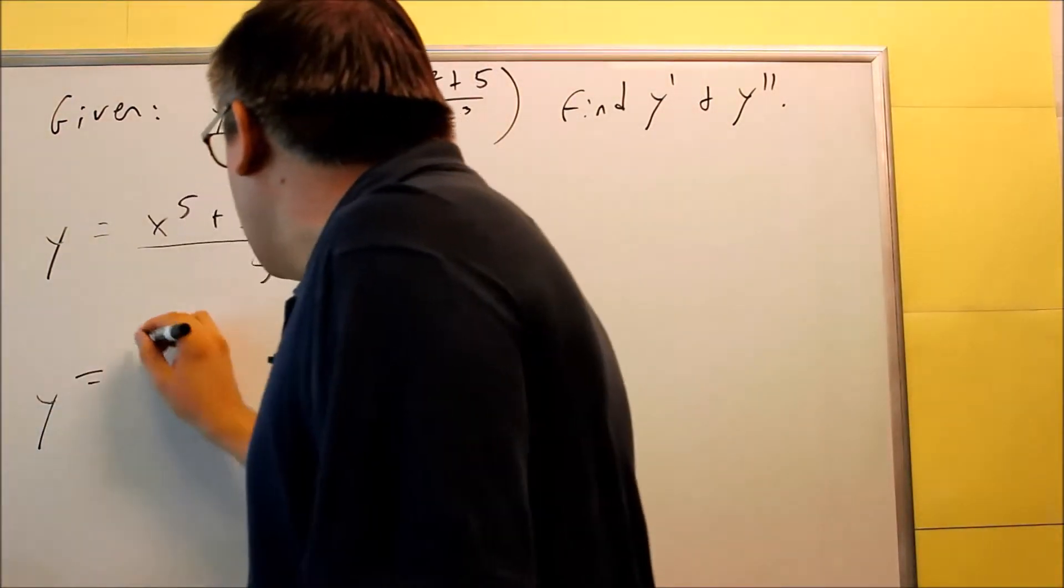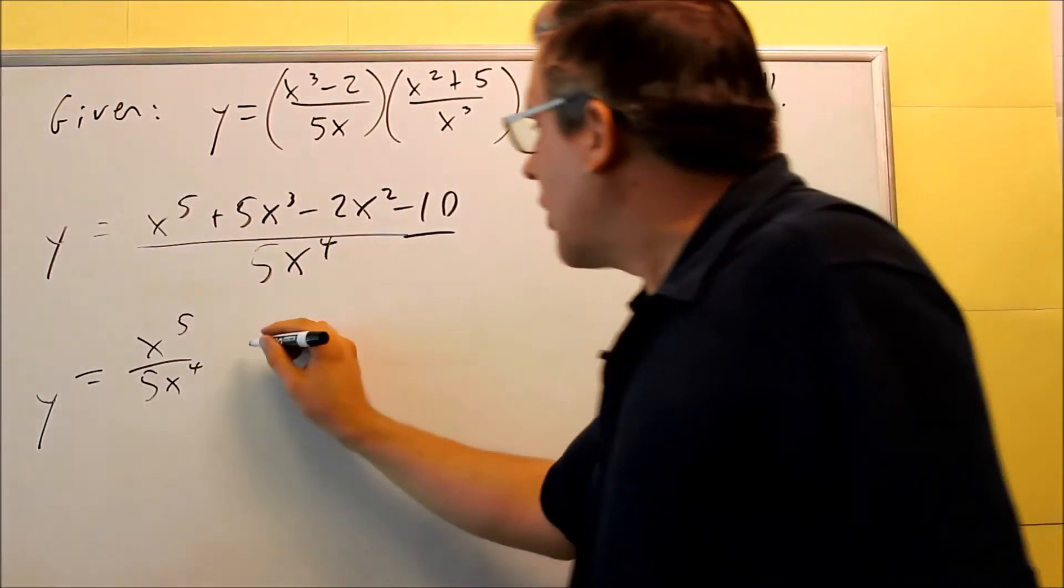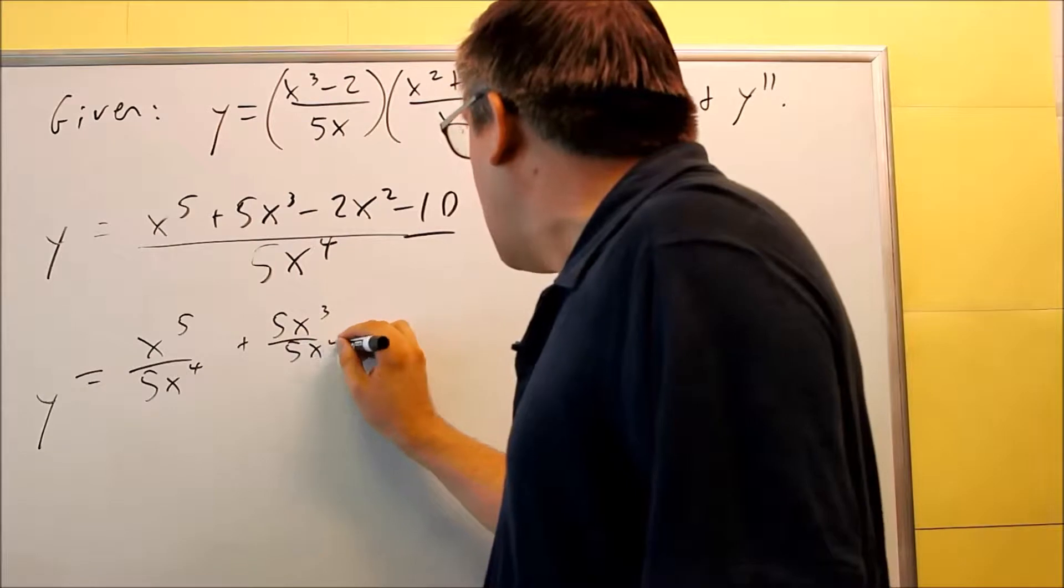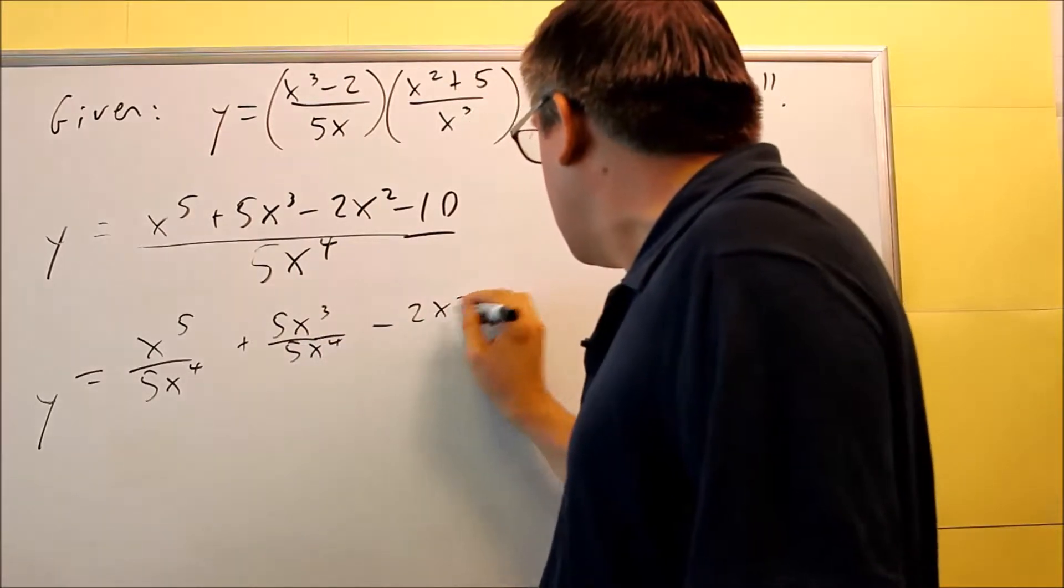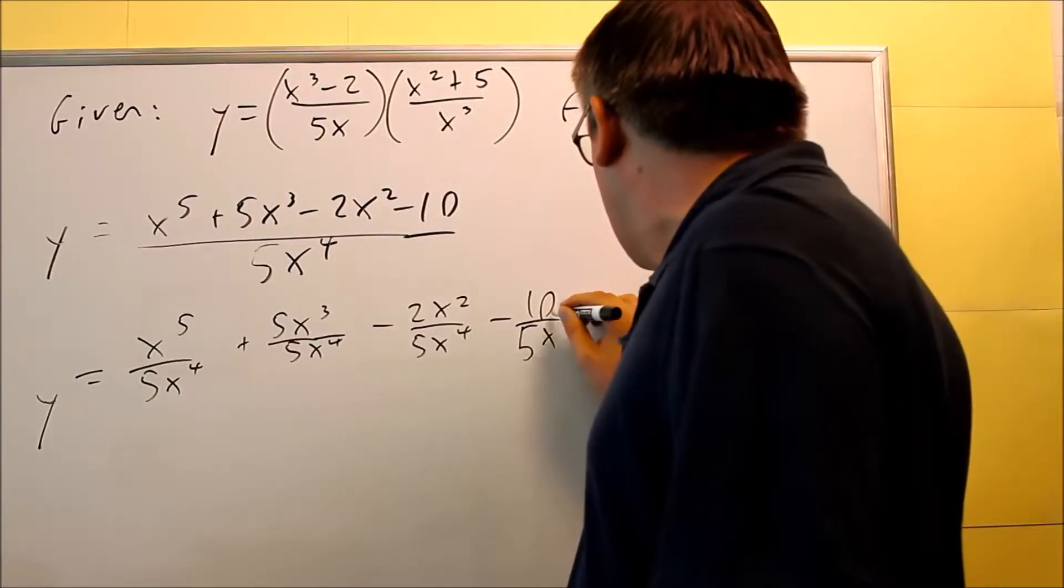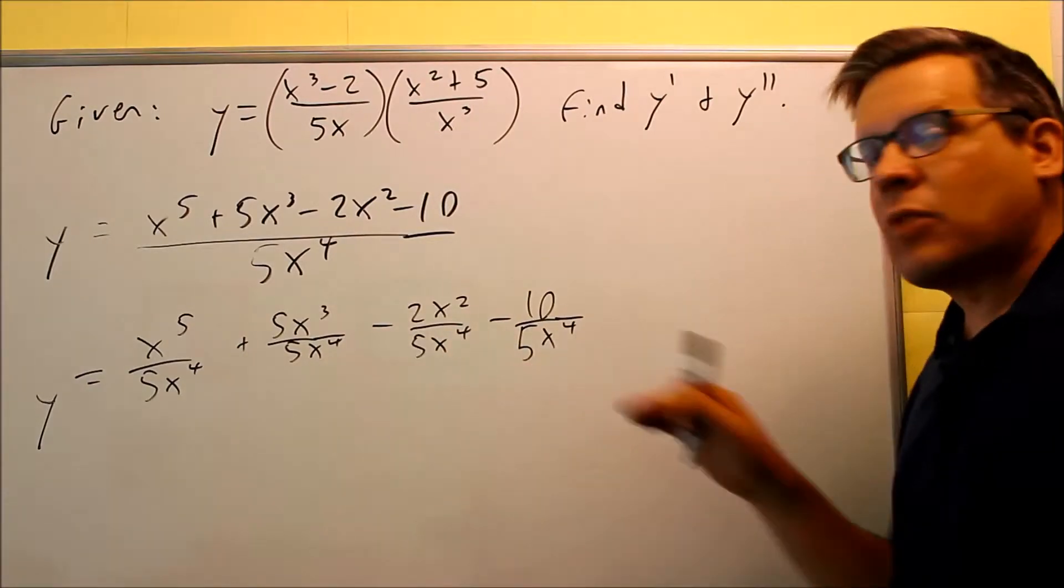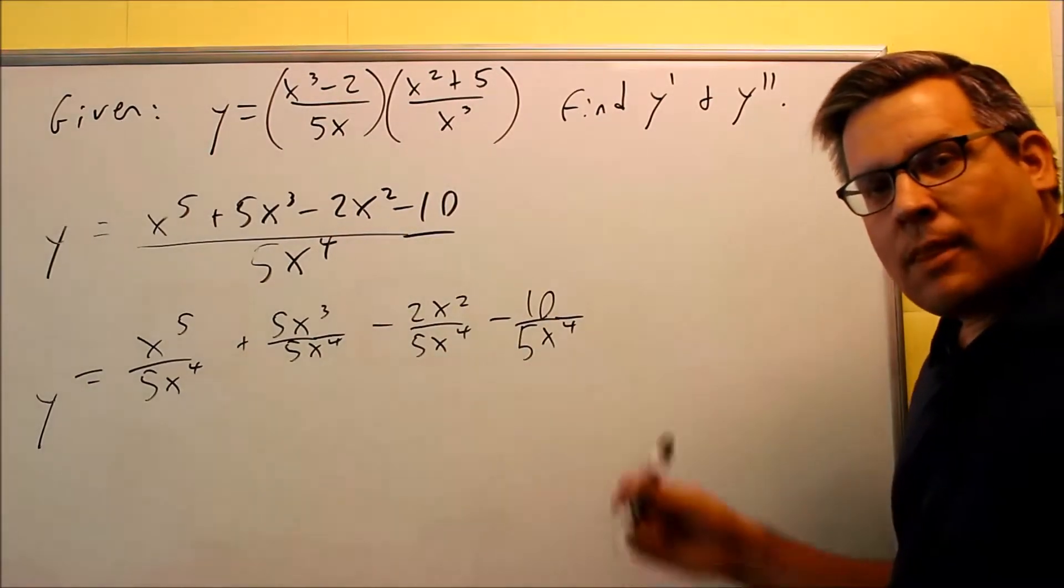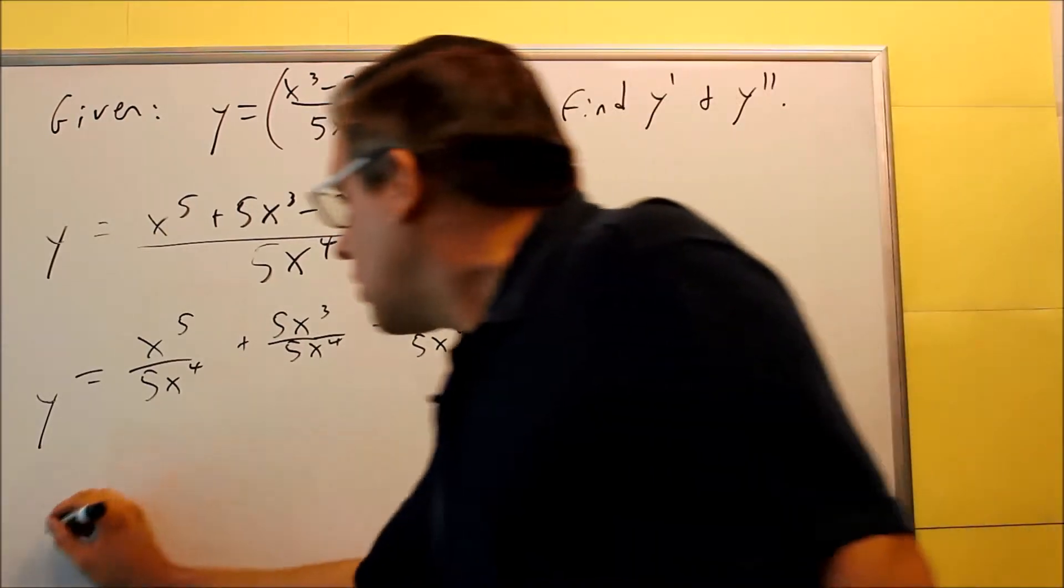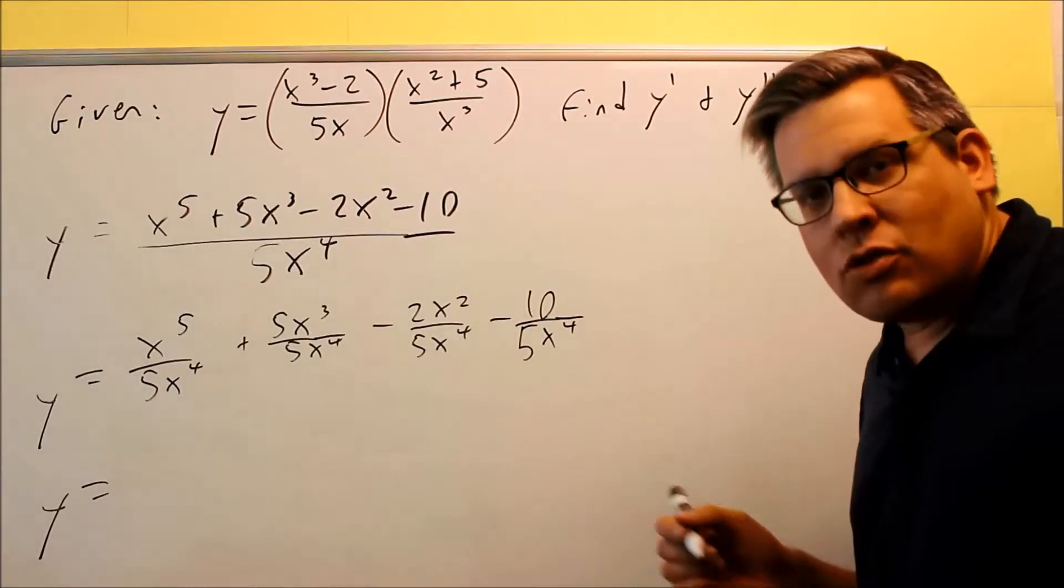So I want to break this down even further. I'm going to divide this first term by 5x to the fourth, and I'm going to do that to all of them. Okay, so I've divided every single term by 5x to the fourth. The next step I want to do is reduce all these. So I'll reduce all that down, and finally once we do that, we'll get into a form where we can do the derivative.